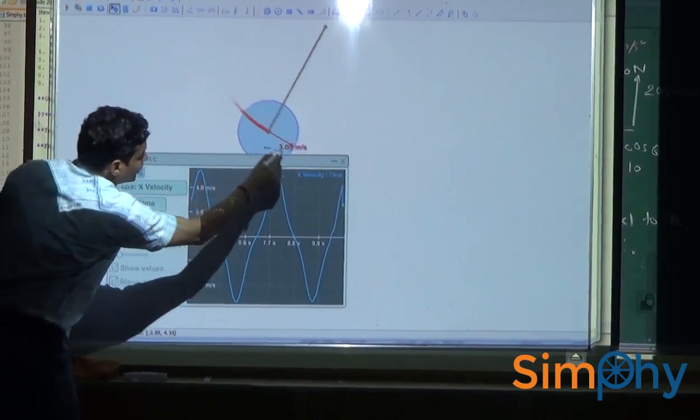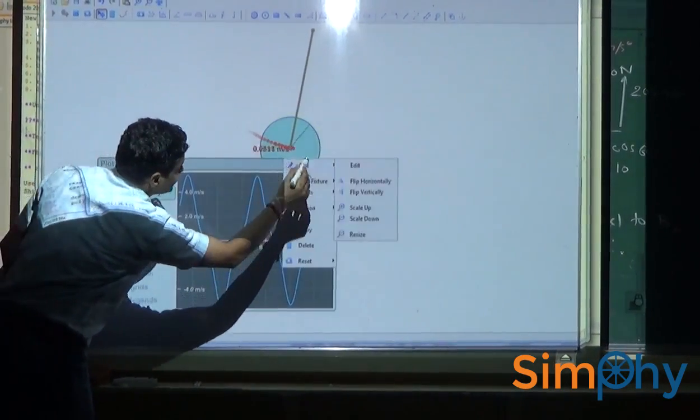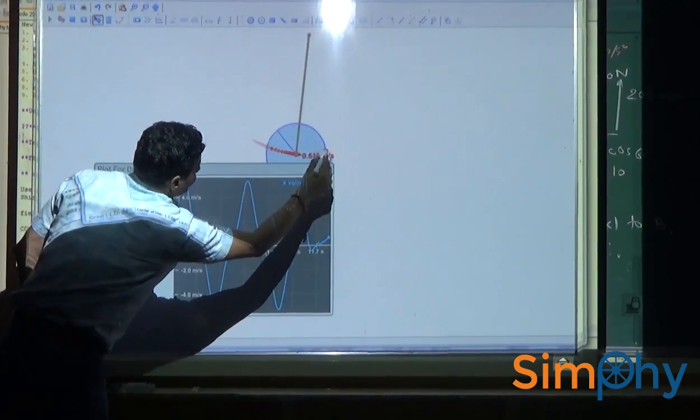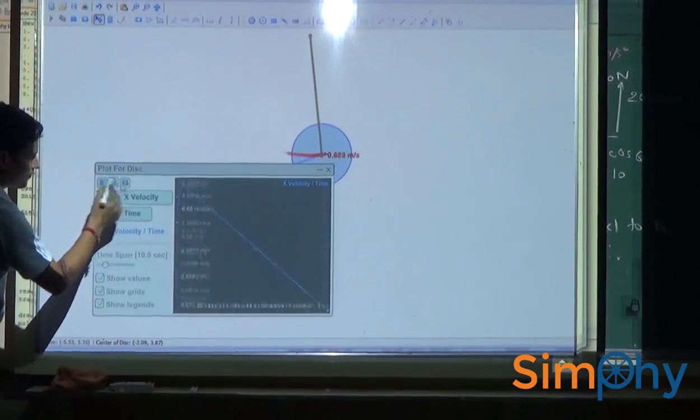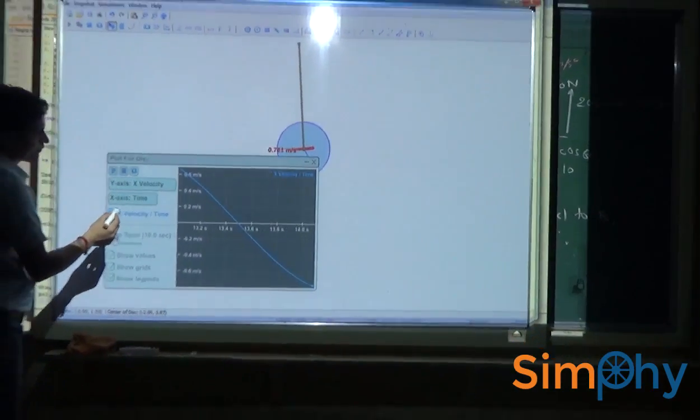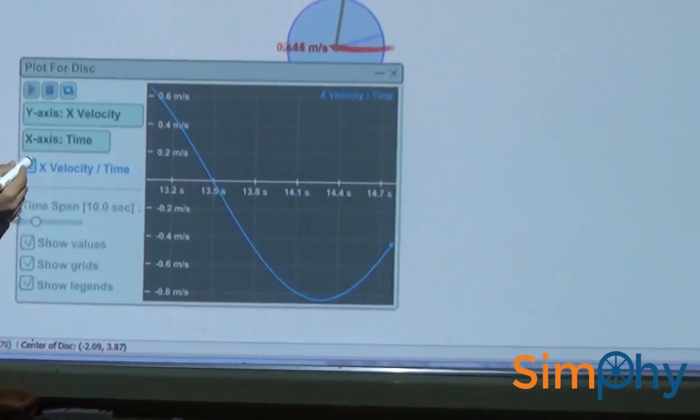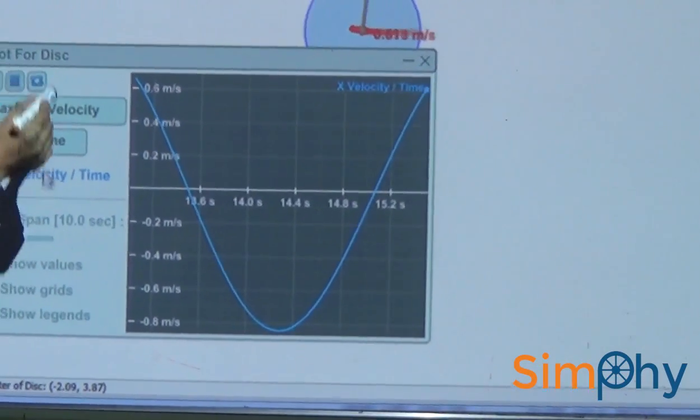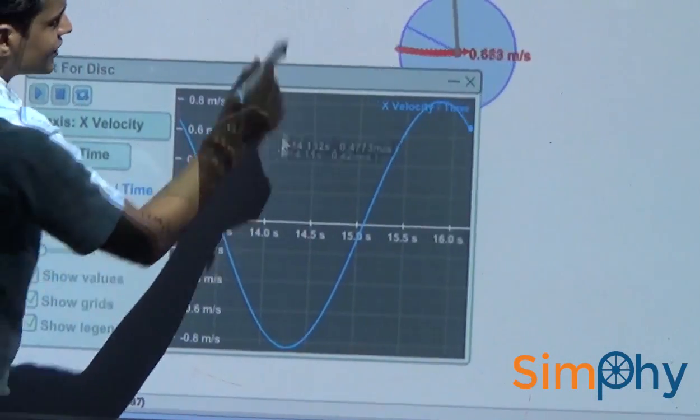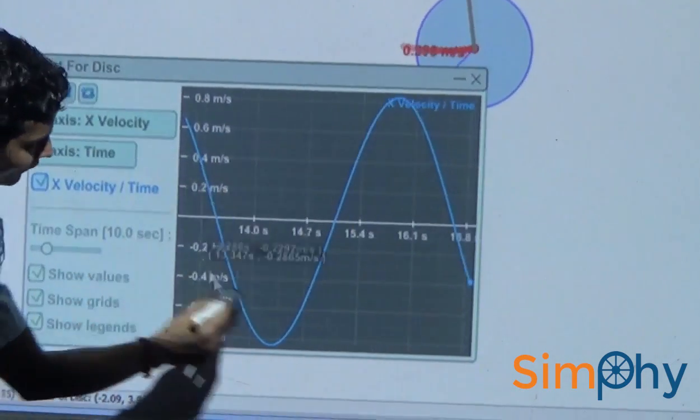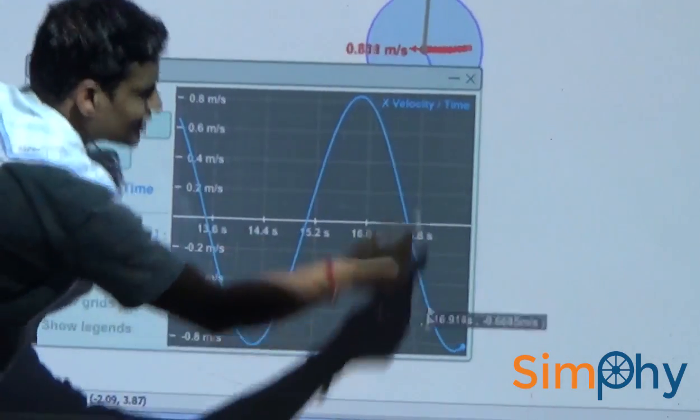If I decrease the amplitude, now let us see how the velocity varies. And you can clearly see for small amplitude the variation of velocity is very much similar to sine function.